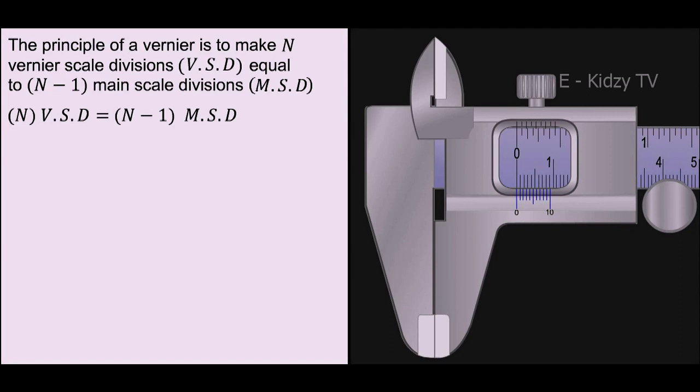Here, capital N means the number of divisions. Indeed, we know that the Vernier scale has 10 divisions and are exactly equal to 9 divisions on the main scale.